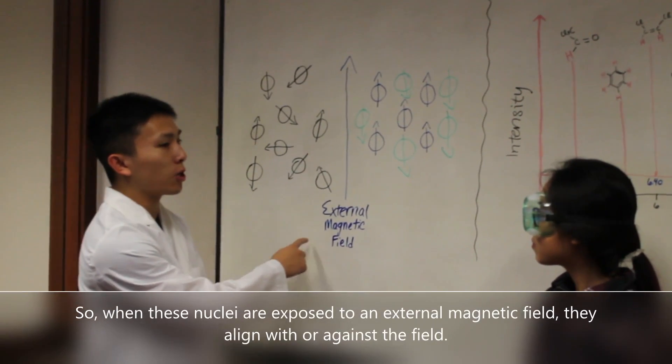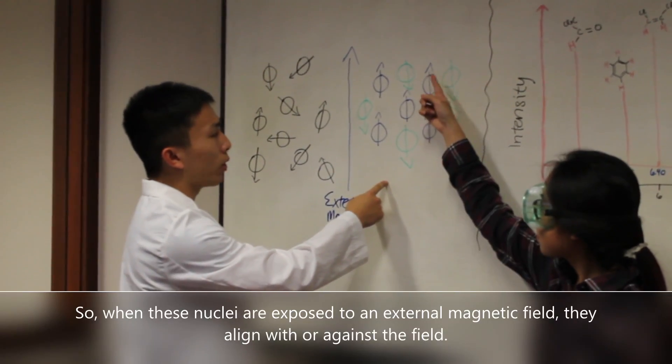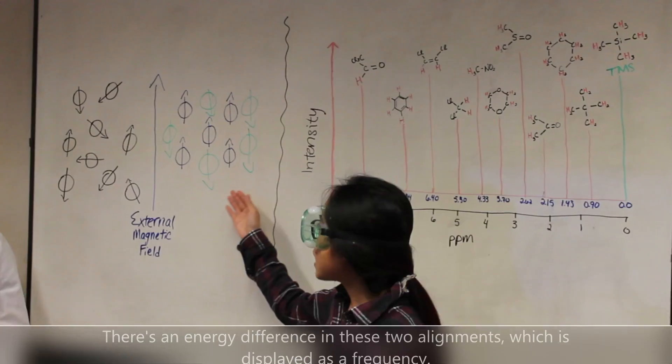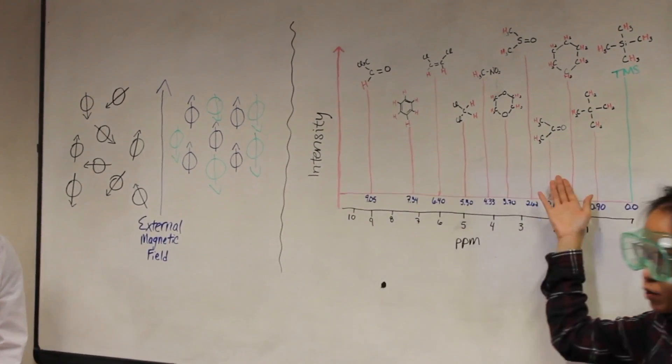So when these nuclei are exposed to an external magnetic field, they align with or against the field. There is an energy difference in these two alignments, which is displayed as a frequency.